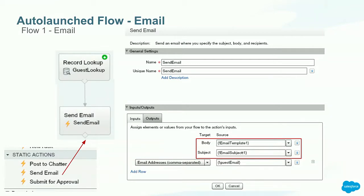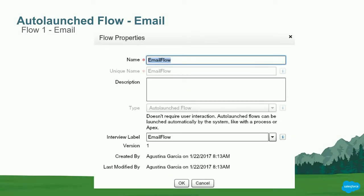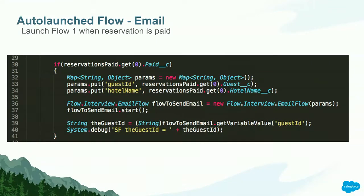The important thing about this flow is that it needs to be auto-launched, because we want to send the email once the reservation is paid. For that, we can create some code in our reservation trigger that, once the reservation is paid, instantiates the flow using the Flow.Interview email flow method and passes the parameters the flow needs — for example, the guest and the hotel name. Remember at the beginning when I talked about flow interviews? This would be a flow interview — a running instance of a flow.